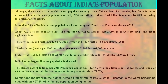Although the crown of the world's most populous country has been on China's head for decades, India is set to overtake China as the most populous country by 2027 and will have almost 1.64 billion inhabitants by 2050 according to a United Nations report. More than 50% of India's current population is below the age of 25 and over 65% below the age of 35. About 72.2% of the population lives in some 6,38,000 villages and the rest 27.8% in about 5,480 towns and urban agglomerations.